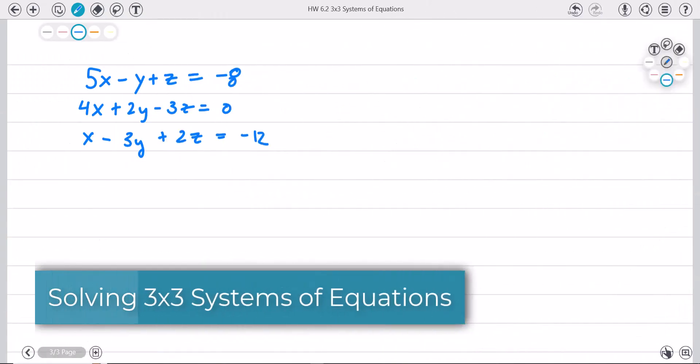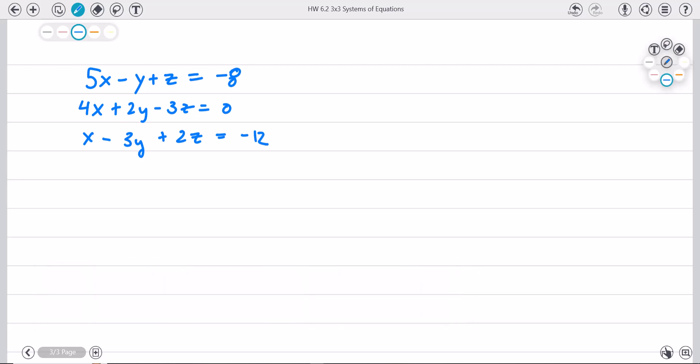All right, when you have these three systems of equations, three variables, typically what you want to do is look to see how you could eliminate at least one variable. So what I'm going to do is label these equation one, equation two, and equation three.